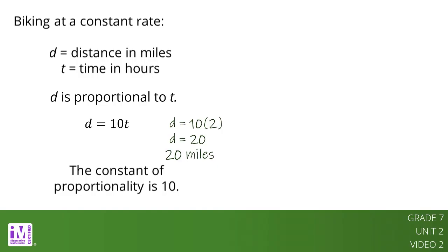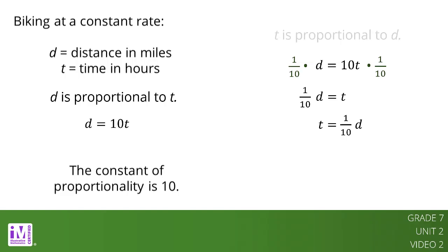But what if we know the distance Kieran rode and we would like to find out how much time it took him? Starting with the original equation, we can multiply each side by 1 tenth. This gets the equivalent equation 1 tenth D equals T. This is the same as T equals 1 tenth D. This new equation tells us that the amount of time he rode, T, is proportional to D, the distance he traveled, and the constant of proportionality is 1 tenth.